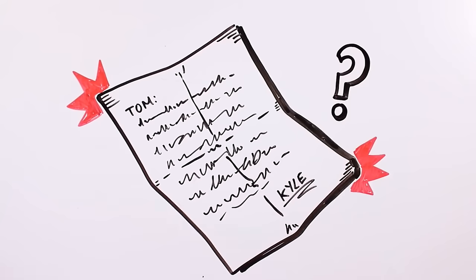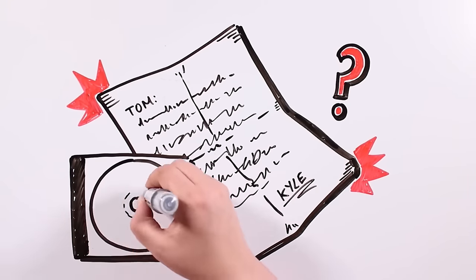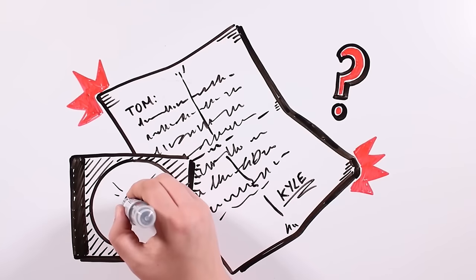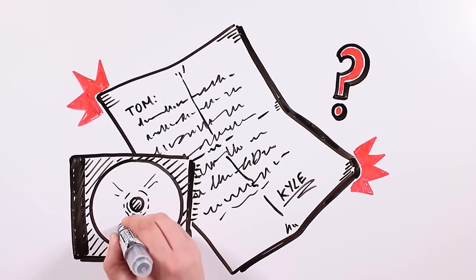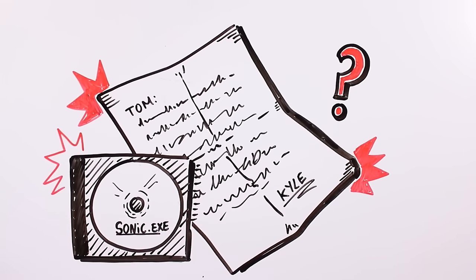After reading the note, I didn't understand anything. Was Kyle playing with me? I looked at the box and the CD inside it. There was nothing weird. It just had written on it with a black marker the words Sonic.exe. How could this hurt me?